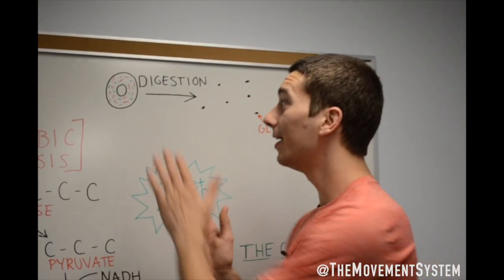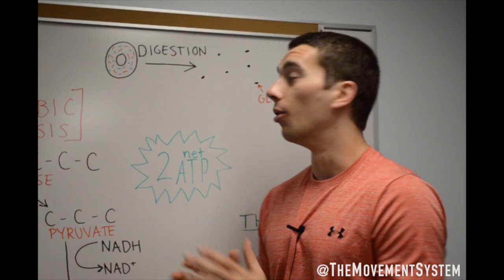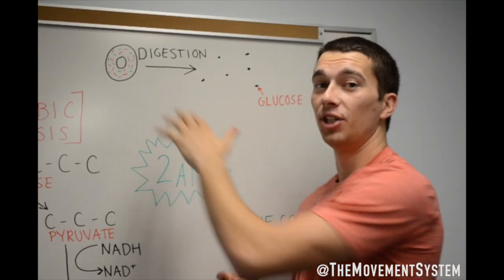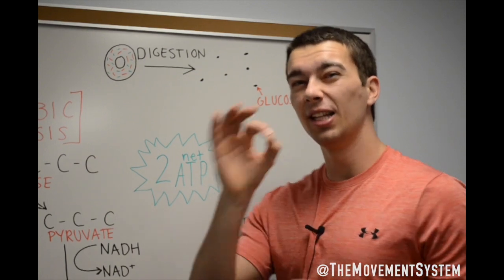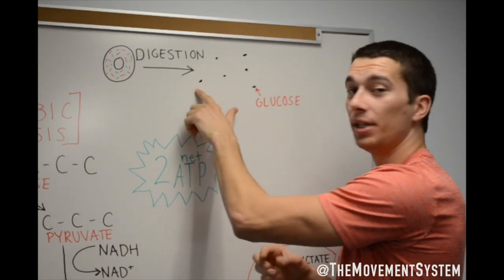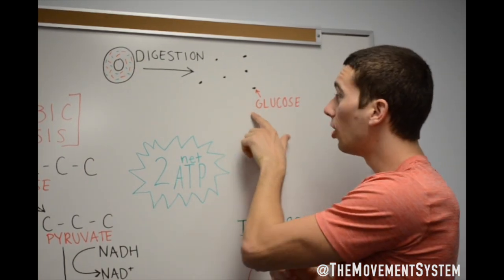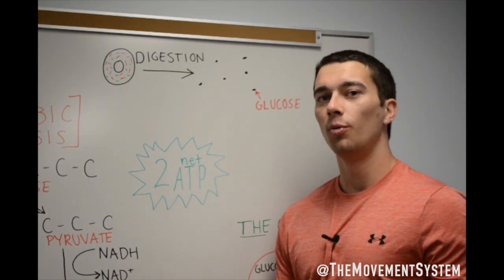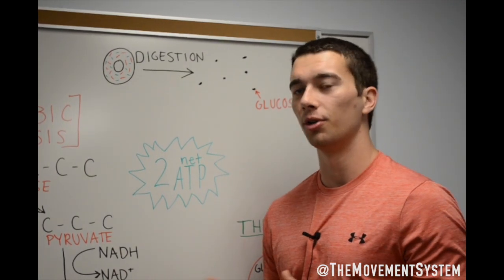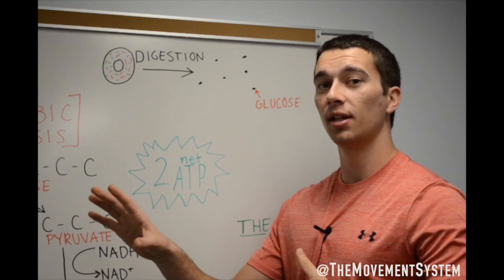So we just ate a donut and we need to make energy out of that. When we eat the donut we're gonna digest it through the stomach and then through the lining of the small intestines and that little bit of donut when we go into the molecular level we call that glucose, a glucose molecule. If it's in the bloodstream we just call that blood sugar or blood glucose and that's where we're gonna start the process of glycolysis.